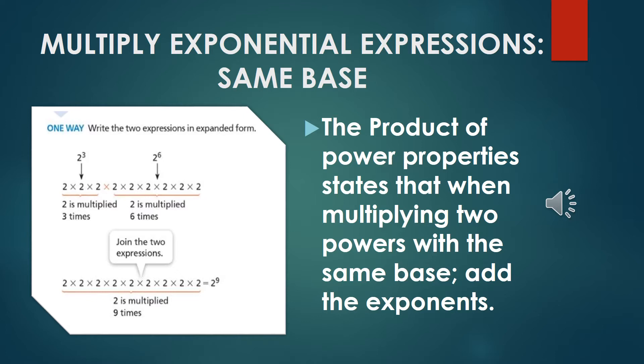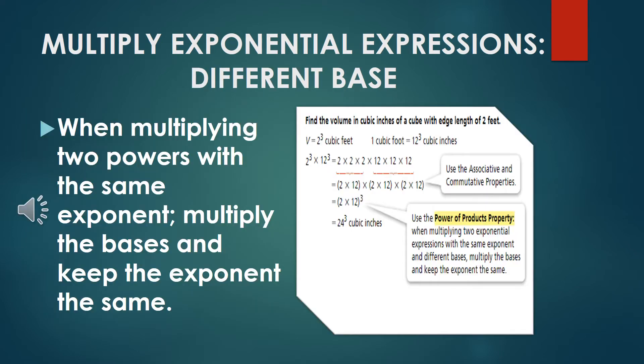In this first example, we need to multiply 2 to the power of 3 times 2 to the power of 6. We are going to copy the 2 and add the exponents: 3 plus 6. So the answer is going to be 2 to the power of 9.